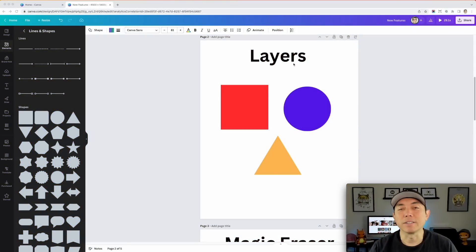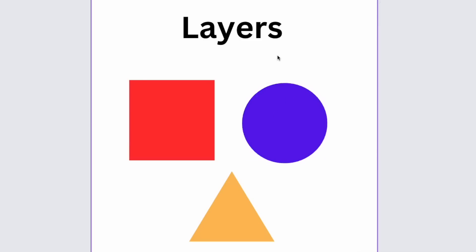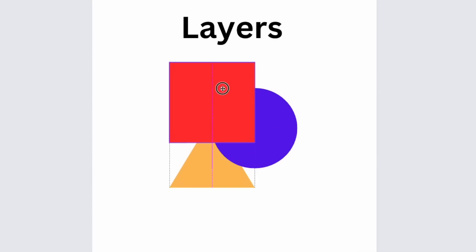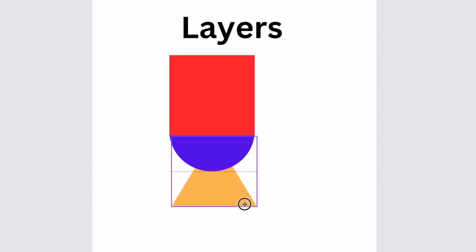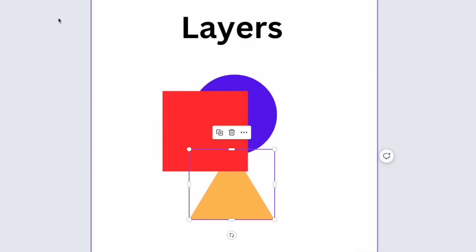The next feature is layers. Canva should have had layers a long time ago — other graphic applications like Affinity Designer, Krita, and Photoshop all have layers. Without it, it was really hard to figure out what was above what, and if you had a bunch of elements you didn't know where they were. Here's how you use layers: you can see I have different elements and which ones are in the back — red, blue, yellow.